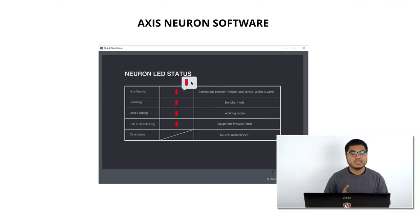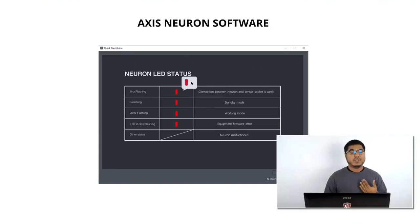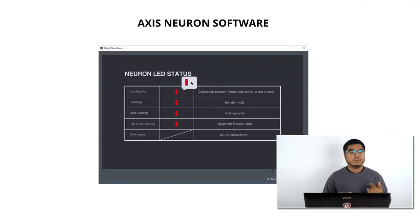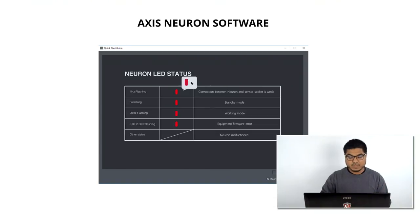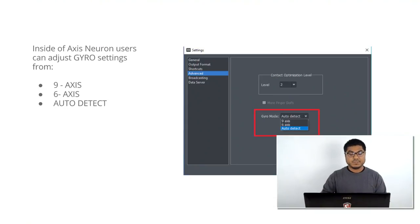We have one hertz flashing, breathing mode, 20 hertz flashing mode, 0.3 slow flashing, and an other status. Those are the basic statuses we have for the Perception On sensors inside of Axis Neuron.